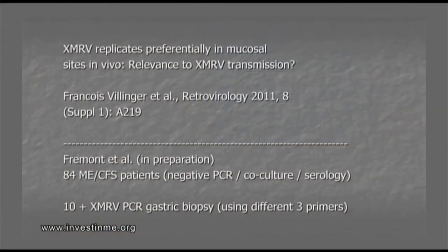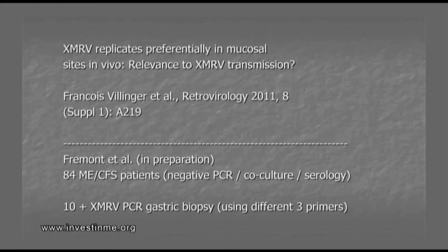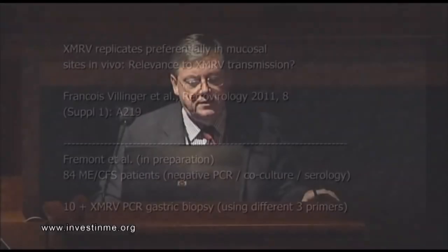We've also done biopsies in the gut in patients who were negative for PCR, co-culture, MLV, and serology, but we didn't find anything. However, we got an extra 10 patients testing positive by PCR from the gastric biopsy. We used only three different primers, so it could be that we get more when we use more primers. This study is still ongoing.